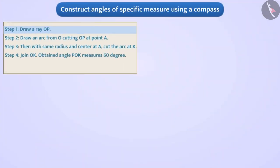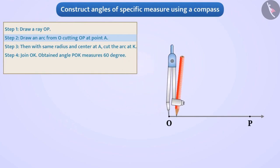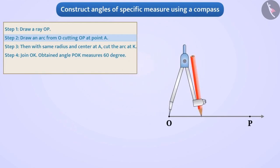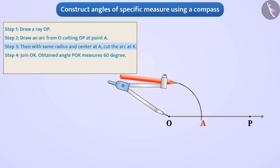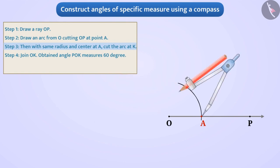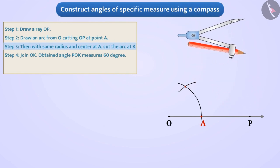Step 1: We will draw a ray OP. Step 2: Now we will take the compass and place its pointed end on O. By taking a convenient radius, we will draw an arc that cuts the ray OP at point A. Step 3: By keeping the same distance in the compass, we will place its pointed end at A and draw another arc cutting the first arc, naming the intersection point K. Step 4: Now we will draw a ray from O through K. The obtained angle POK measures 60 degrees.